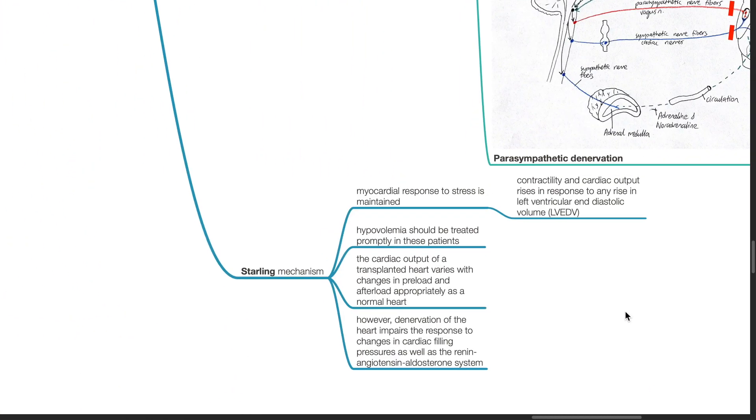Starling mechanism. The myocardial response to stress is maintained. Contractility and cardiac output rises in response to any rise in left ventricular end-diastolic volume. Hypovolemia should be treated promptly in these patients. The cardiac output of a transplanted heart varies with changes in preload and afterload appropriately as a normal heart.